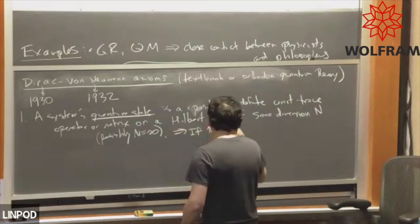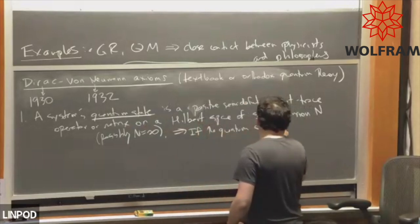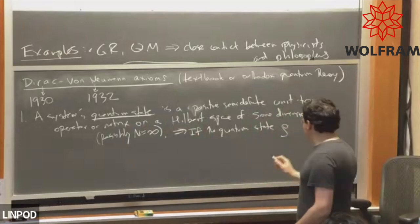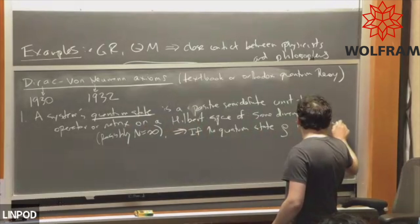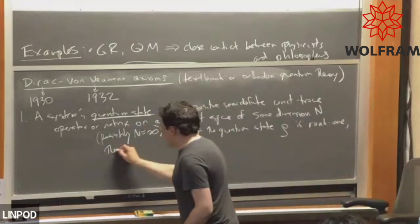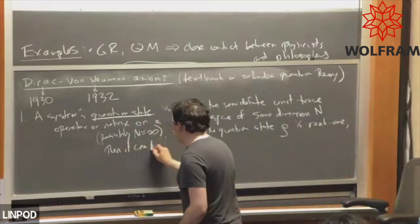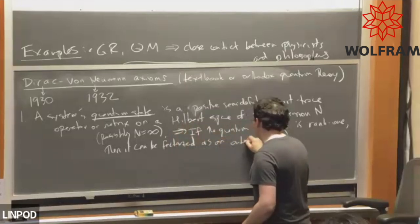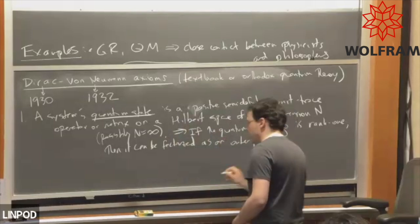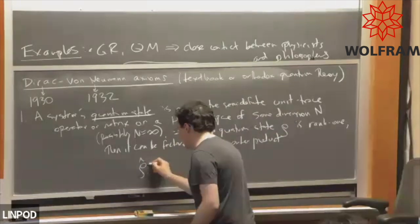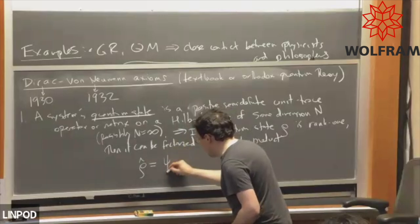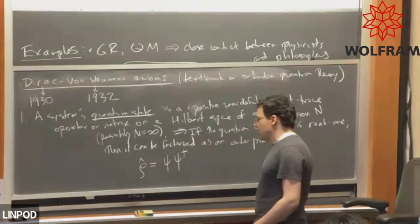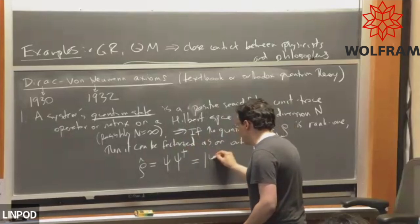Now if the quantum state, which is denoted by the Greek letter ρ (rho), is rank one, then it can be factorized as an outer product of the form ρ̂ equals ψ ψ†, although we don't usually write it like this. We write it using Dirac's notation: |ψ⟩⟨ψ|.